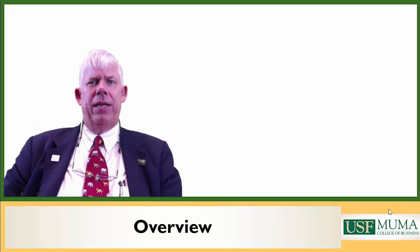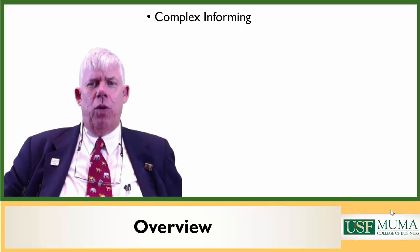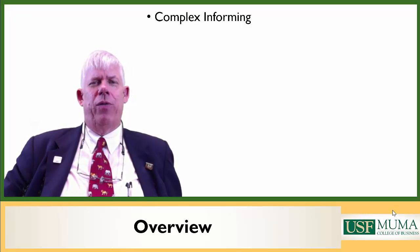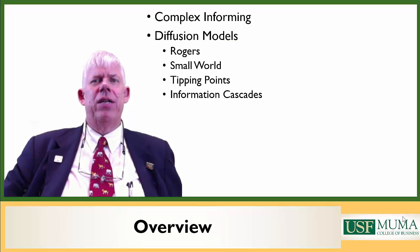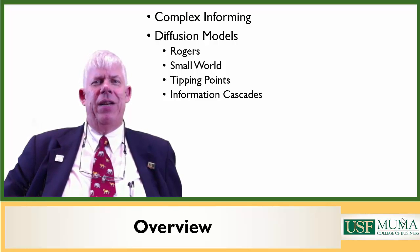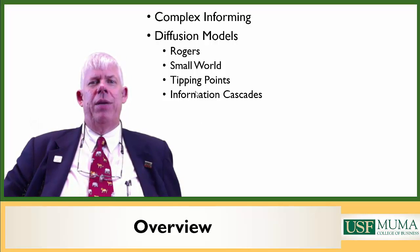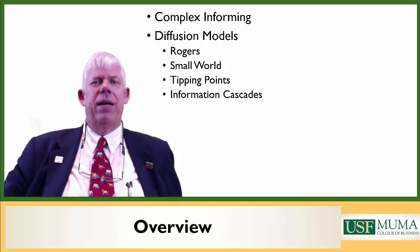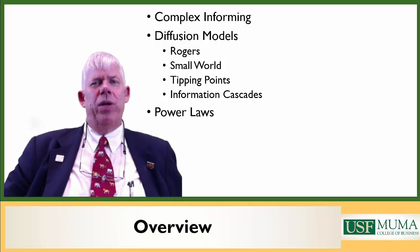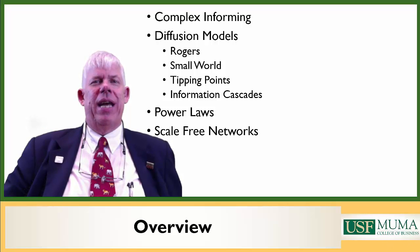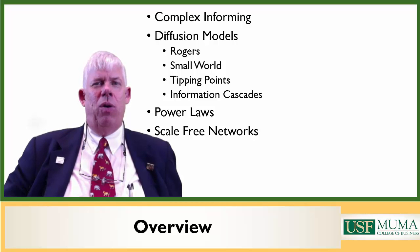Some of the topics we'll be looking at in this chapter: we'll start with a look at complex informing processes, how they're different from the straightforward basic model. We'll then take a look at various diffusion models — how information and innovations pass through multiple individual populations. We'll start with Rogers, then Watts' small world model, the tipping points of Malcolm Gladwell, and information cascades. Then we'll move on to power laws and scale-free networks and how networks self-organize.